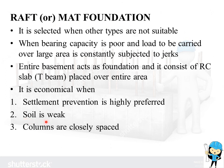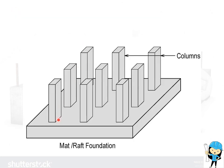Raft foundation is also used when the soil is weak, such as clay, or when columns are closely spaced. The entire basement acts as the foundation, and it consists of an RC slab with T-beams placed over the entire area. This bottom pad is called a mat or raft. This foundation is called a raft because the building seems like a vessel floating on a sea of soil. The load spreads evenly over the entire area from all the columns placed over it.